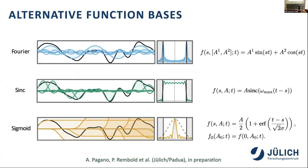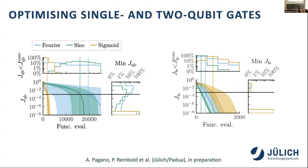One of the new things we are working on — work with Fila Rembold and Alice Pagano from Padua, from the group of Simone Montangelo — is that Fourier is one possibility but you can use others. Piecewise constant functions are one type of basis giving square functions, but you want more freedom. Square functions have artifacts: singularities and leakage of Fourier components outside a certain bandwidth. You can use other things, for instance the sinc basis or the sigmoid basis, which is based on smooth error-function-like steps. We have done work more recently comparing the output of different bases.